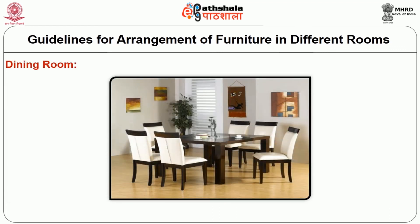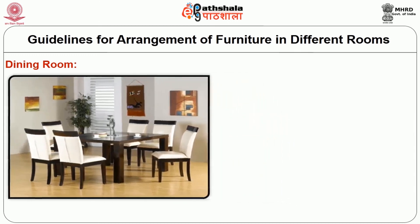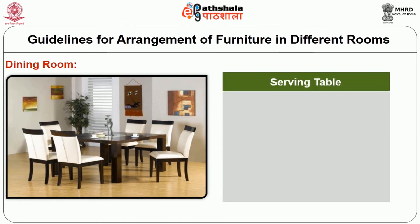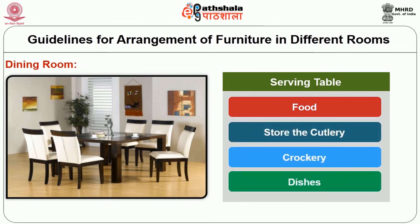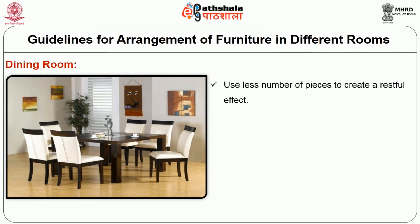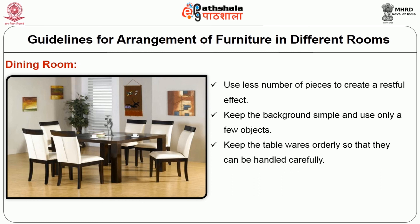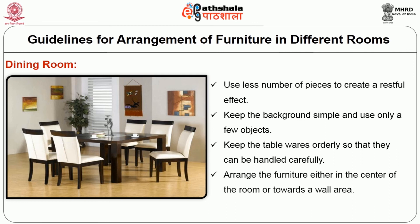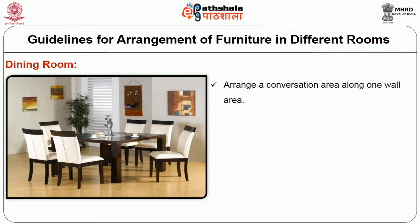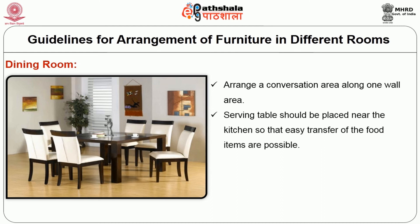Dining room: The dining area can be arranged either in the centre of the room or towards the wall area. The chairs should be arranged around the table with adequate space around them for users to pull them out comfortably and for serving of food. A serving table should be placed near the kitchen so that it is easy to transfer food, store the cutlery, crockery and dishes used for meals. Use fewer pieces to create a restful effect, keep the background simple, and keep the tablewares orderly. Arrange a conversation area along one wall area, and if possible the fridge should be placed parallel to the wall area.